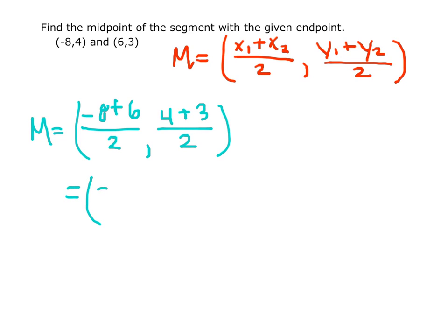Negative 8 plus 6 is negative 2, still divided by 2, and 4 plus 3 is 7, divided by 2.